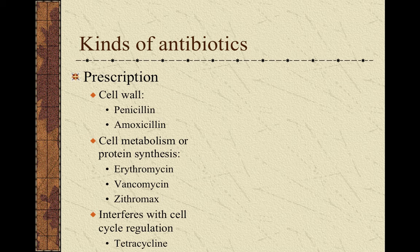Antibiotics work in all different ways. Sometimes they interfere with physical parts of bacteria, particularly the cell wall. Sometimes they disrupt a critical part of the bacteria's metabolism — the molecules that it is able to make or break down. Or they interfere with the process of protein synthesis, usually by interfering with bacterial ribosomes. And even with cell cycle regulation, preventing the bacteria from dividing and reproducing normally.